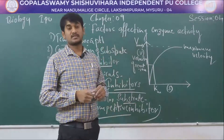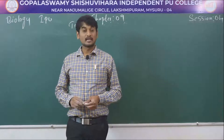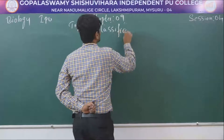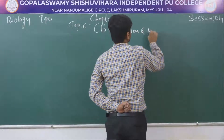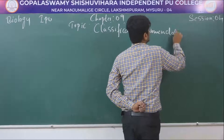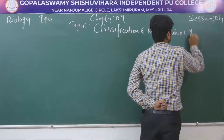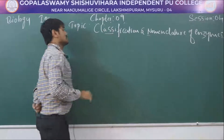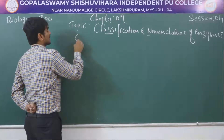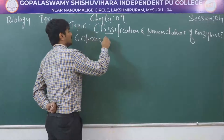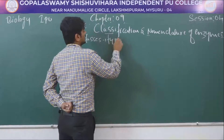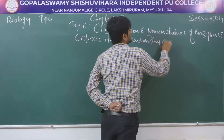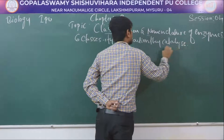These are all about factors affecting enzyme activity. The next topic is classification and nomenclature of enzymes — which means naming of enzymes. The enzymes are classified into six classes based on the type of reaction they catalyze — meaning the reaction they accelerate or act upon.